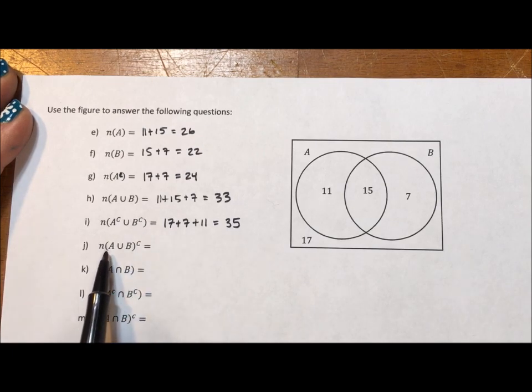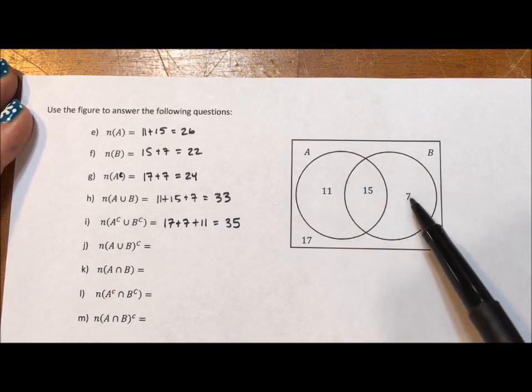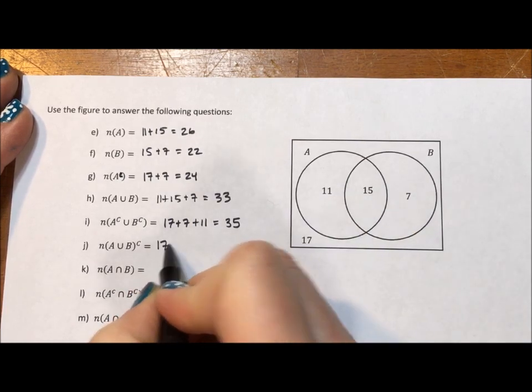This one says the union of A and B complement. So this one is saying A and B, that's the 11, 15, and 7, but we want the complement. We want everything but those. So that's just the 17.